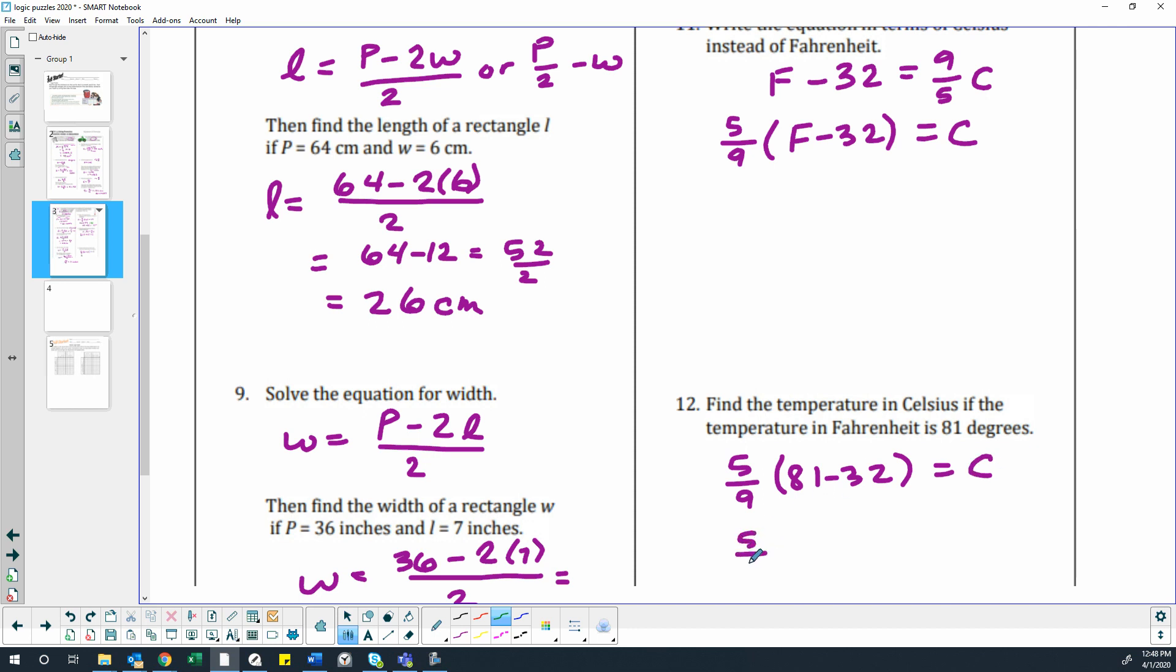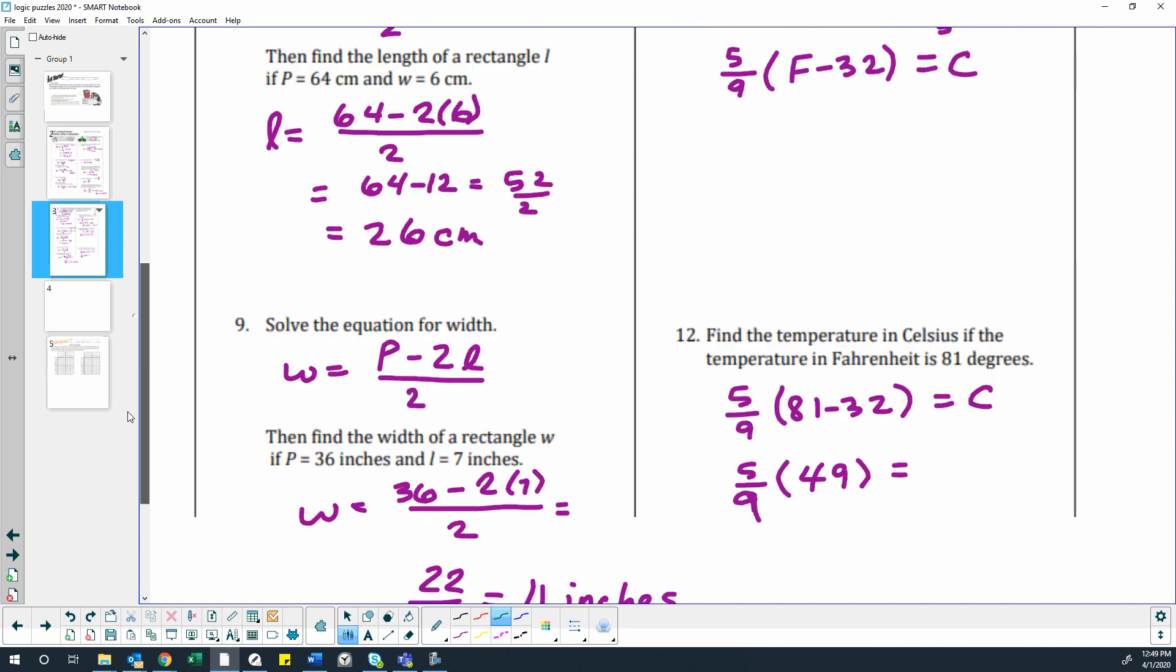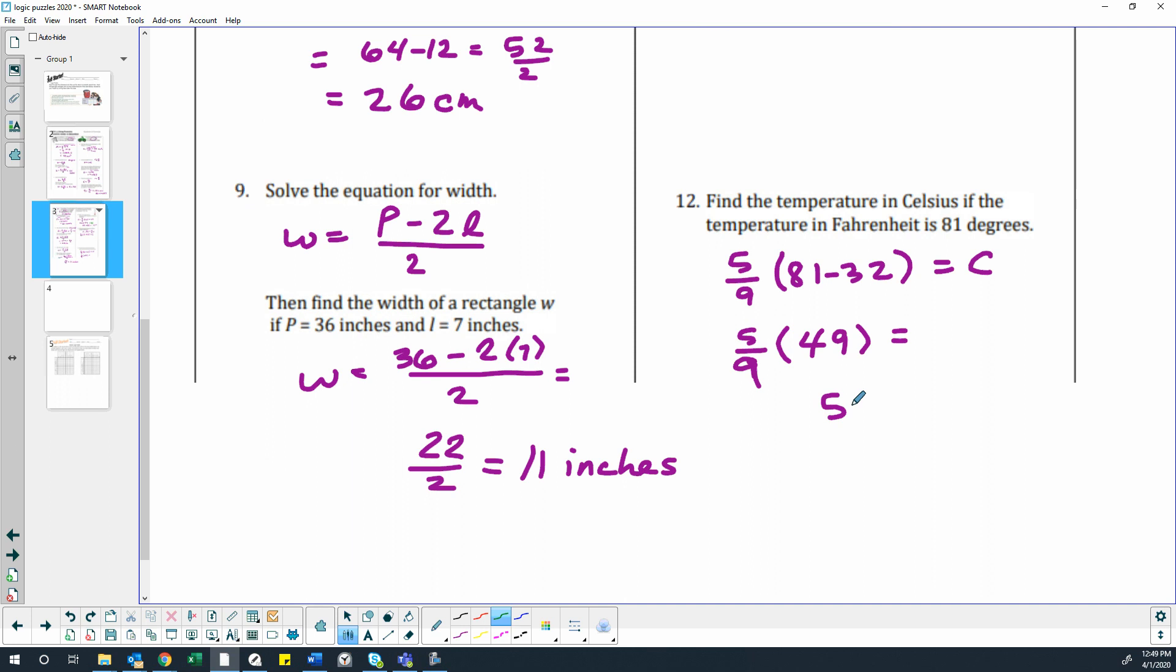So we're going to start this time by subtracting the 32. That has to happen first because it's in the parentheses. So what is 81 minus 32? So that's 49, and then we're going to multiply by 5 and divide by 9. So 5 times 49 divided by 9.